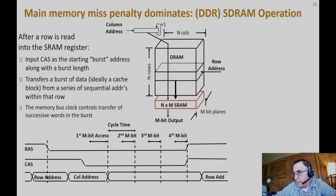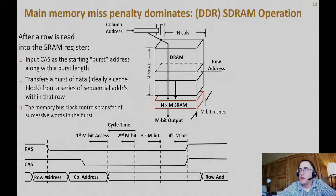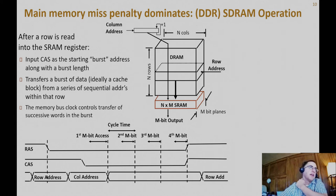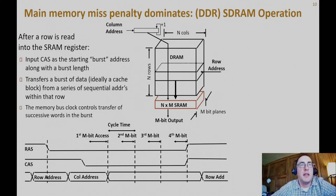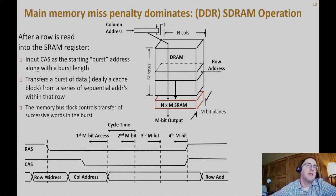Now we're going to talk about how DRAM memory works and how you calculate miss penalty for memory, to get a feel for where that miss penalty number comes from. On the top here we have a cube representing DRAM — dynamic random access memory. DRAM is organized as a 2D array of n rows and n columns, giving an n-by-n array. Each of these rows and columns is a bit plane, and we have m bit planes, so the bit plane is m bits wide.